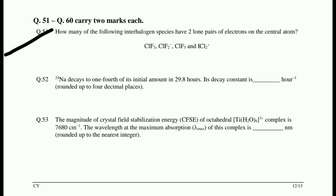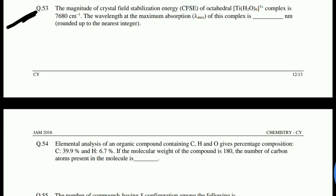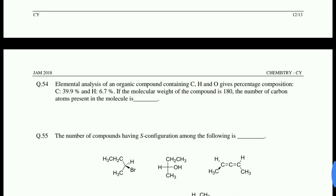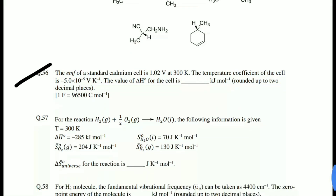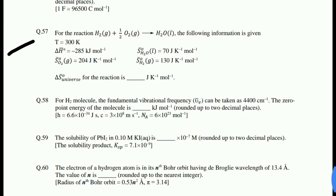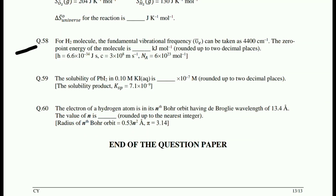The 51st question is inorganic chemistry — P block elements. 52nd is inorganic chemistry — nuclear chemistry. 53rd is inorganic chemistry — D-block elements. 54th is physical chemistry — basic physical chemistry, a 10+2 standard question. 55th is organic chemistry — RS nomenclature. 56th is physical chemistry — conductance. 57th is physical chemistry — thermodynamics. 58th is physical chemistry — hydrogen molecule spectra. 59th is conductance — physical chemistry. 60th is physical chemistry — atomic structure.